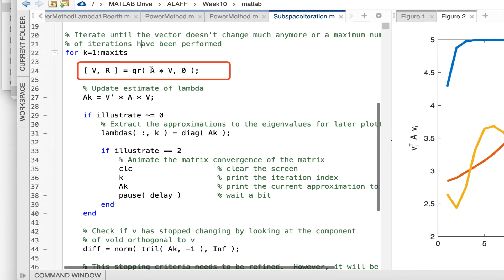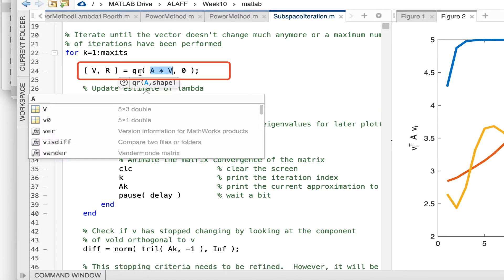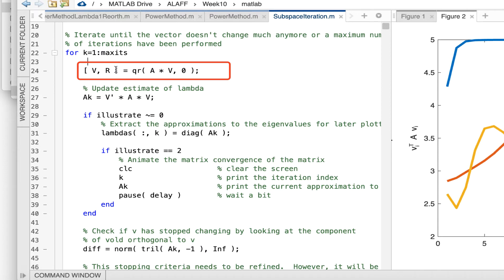And then we start iterating by doing A times V and then computing the QR factorization of that to make the resulting columns of A times V mutually orthonormal again.